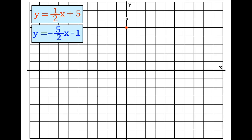We're going to rise one and run two, and we put another point right there. Then we graph the line. You have to graph these very carefully because the two lines are going to intersect somewhere on the grid.